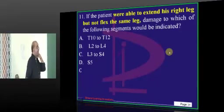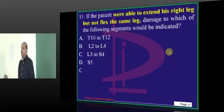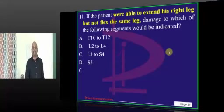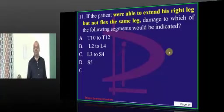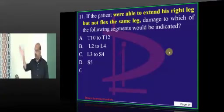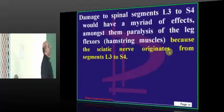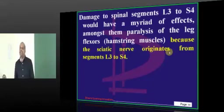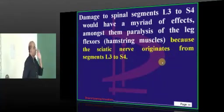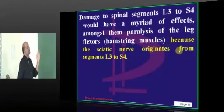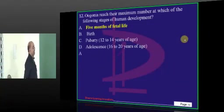A patient is unable to flex the right leg but is able to extend it — which segment is damaged? Dermatome root values are something you need to carry in your head to the exam hall. You cannot afford to forget which root value corresponds to what. Master the dermatomal root value diagram. The sciatic nerve originates from L3 to S4 and is associated with paralysis of the flexors, which are the hamstring muscles — that is what needs to be basically remembered.